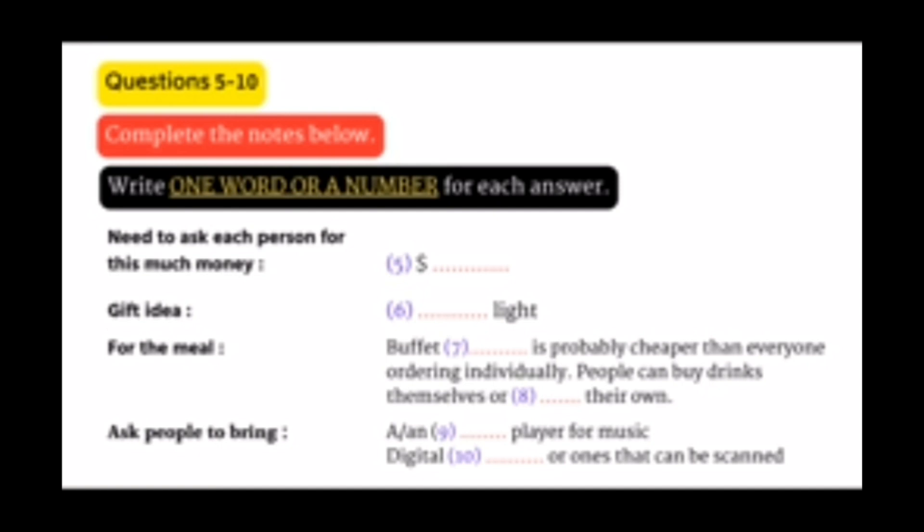Now we need to think about reservations at the restaurant. Well, we should get their big banquet room, yeah? Yes, definitely. Should we ask the restaurant to prepare a buffet? Isn't that expensive? No, I don't think it is. A buffet dinner sounds cheaper than everyone ordering individual meals, definitely. How about drinks? They can buy drinks themselves or bring their own. Okay. Yeah, it would cost too much if we bought drinks ourselves. Certainly.